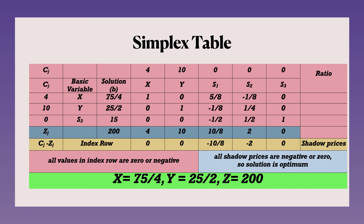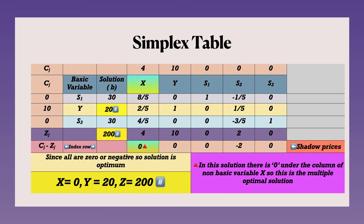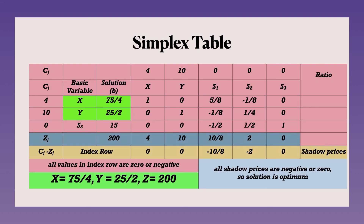The solution remains optimum with Z = 200. Comparing both solutions: first solution had x = 0, y = 20, Z = 200; the new solution has x = 75/4, y = 25/2, Z = 200. Both solutions are found. So if asked to find multiple optimal solutions, take the non-basic variable column where 0 appears as the key column and proceed further. If simply asked whether it's multiple, just mention 'it has multiple optimal solution' after the first solution. I hope this is clear. All LPP topics are now finished. A separate formulation video is coming soon. I hope it will be beneficial.